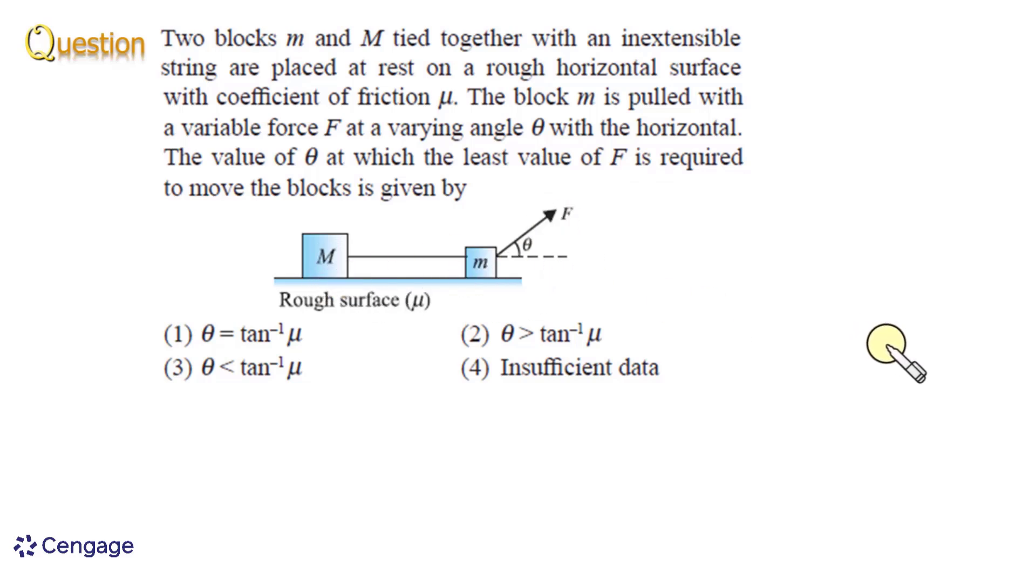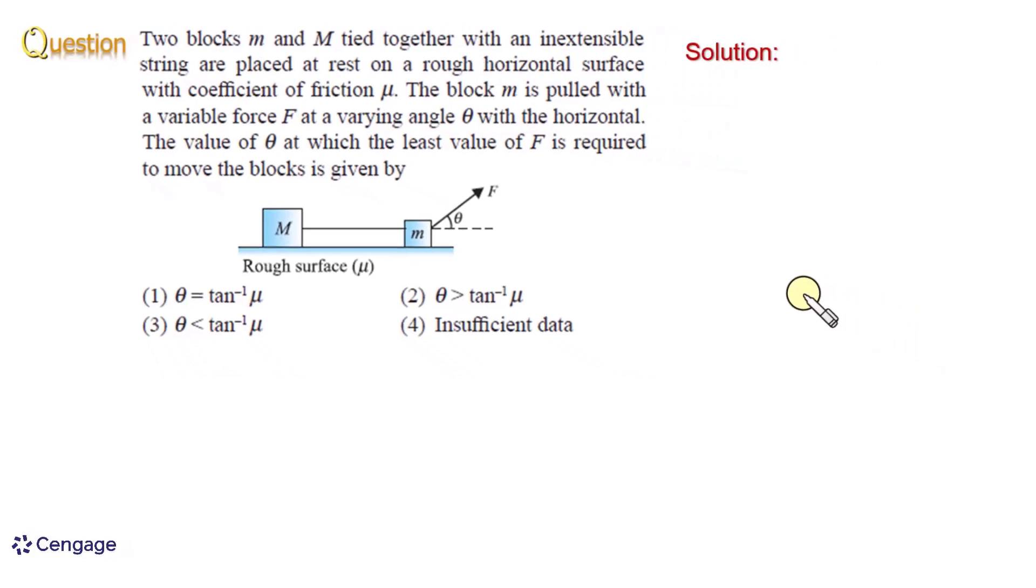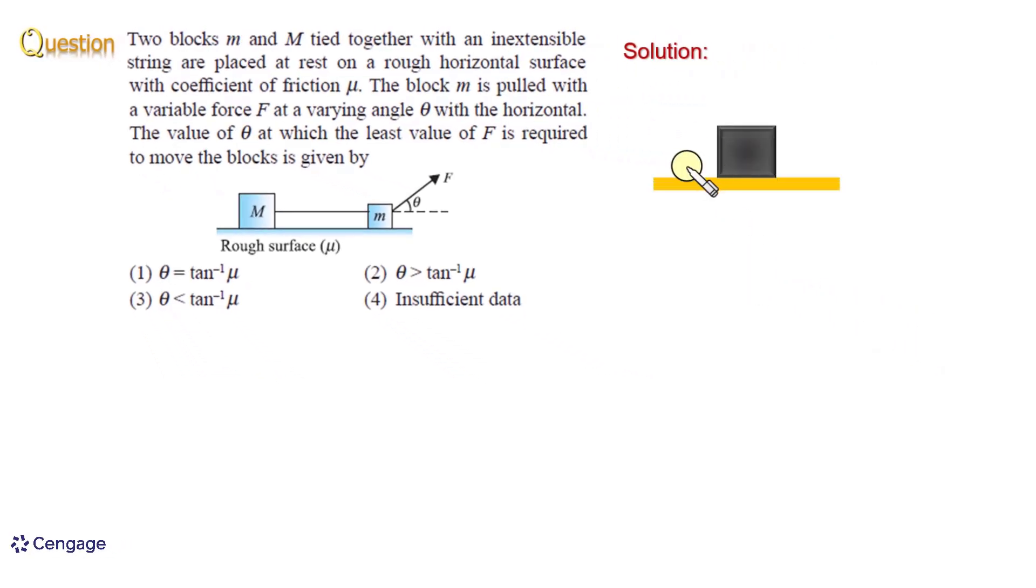For analyzing this situation, let us revise the concept of angle of friction. Suppose we have this block placed on a rough horizontal surface with coefficient of friction mu. We are interested to move this block by applying the least force. Suppose this least force applied is F minimum.